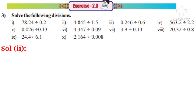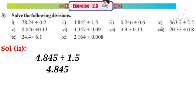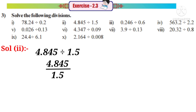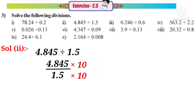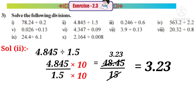Solution 2: 4.845 divided by 1.5, that means 4.845 by 1.5. Observe that there is only one decimal place in the denominator. So we have to multiply with a number which has only one zero after 1, that is by 10. The decimal place will shift right side after one digit in the numerator. So 48.45 by denominator becomes 15. On simplification by 15, the answer is 3.23.